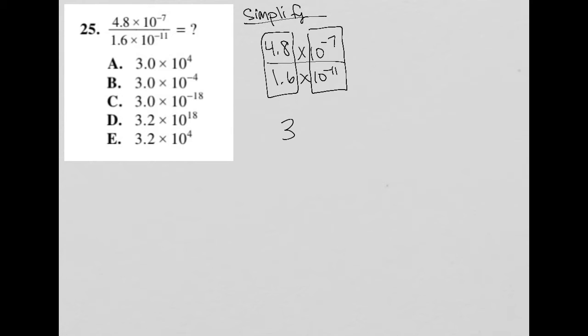So even just knowing that, that crosses out D and E because those have 3.2 as that first number. Now, the difference here is when I divide numbers that have an exponent, if the bases are the same, which they are, they're both 10, that base remains the same.